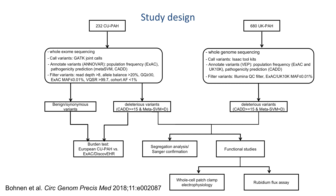The authors identified a de novo missense variant, R958H, in ATP binding cassette subfamily C member 8, or ABCC8, in a patient diagnosed with idiopathic PAH at the age of 10. This prompted them to assess 232 patients in the CUPAH cohort who had undergone exome whole genome sequencing for ABCC8, and they identified 7 additional rare damaging missense variants.